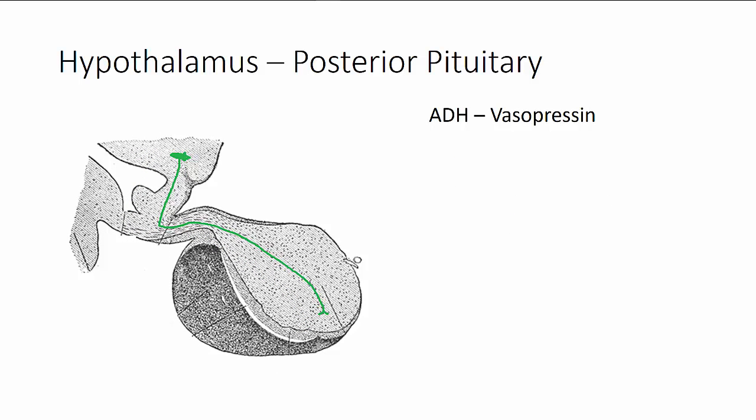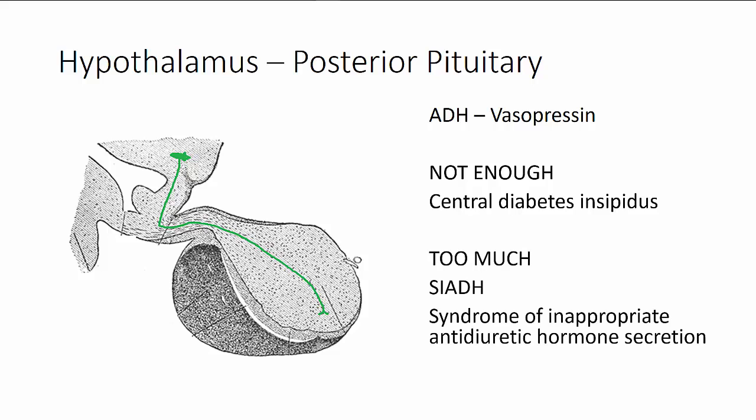Understanding what happens when there's a disorder of an endocrine gland — too much or too little hormone being produced — can be very helpful in cementing your understanding of how the normal gland functions. Today we'll look at the problem of insufficient vasopressin, called central diabetes insipidus, and we'll also look at excessive antidiuretic hormone secretion, syndrome of inappropriate antidiuretic hormone, or simply SIADH.